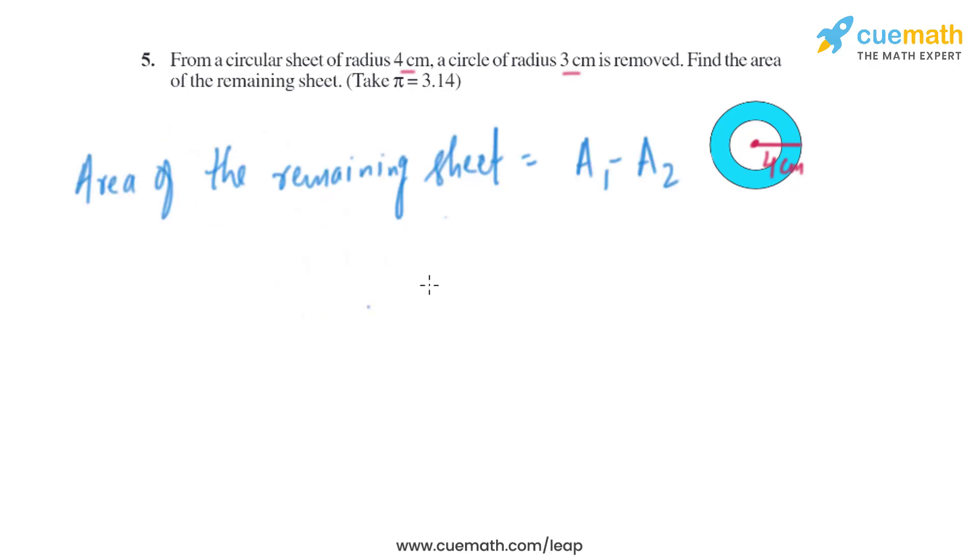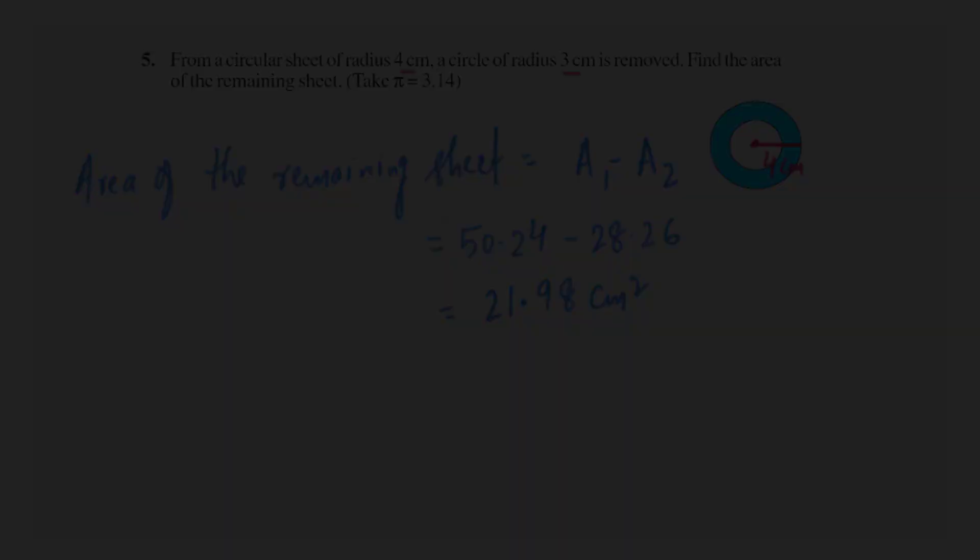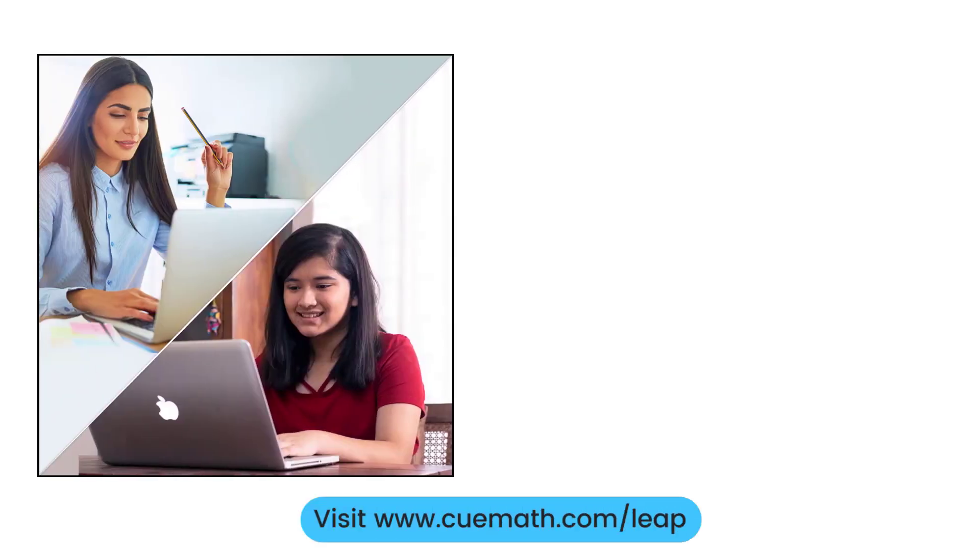A₁ - A₂. We have A₁ = 50.24 cm² and A₂ = 28.26 cm². On subtracting them, we get the area of the remaining sheet which equals 21.98 cm². So that will be the area of the remaining sheet.